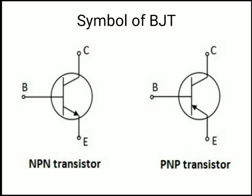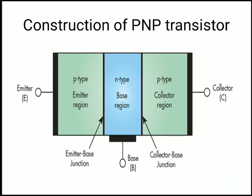In both symbols there is only one difference: in the NPN transistor the arrow on the emitter terminal points downward (away from the base), and in the PNP it points upward (toward the base). This arrow represents the direction of conventional current. So in NPN the current flows away from the base, and in PNP it flows toward the base.